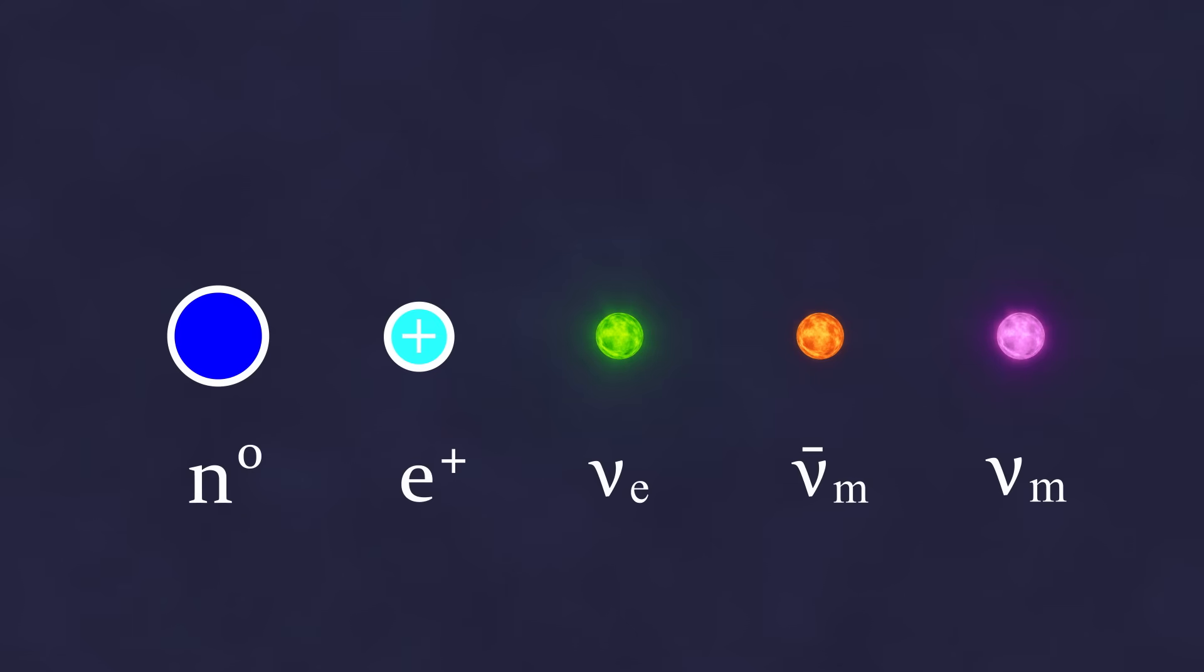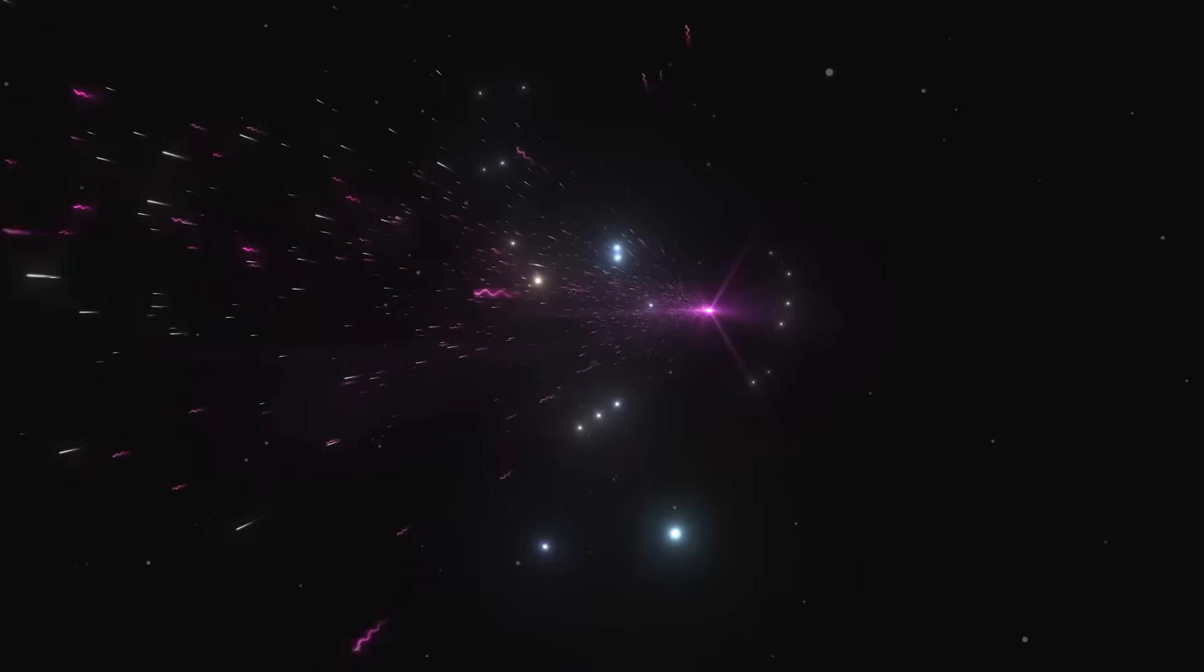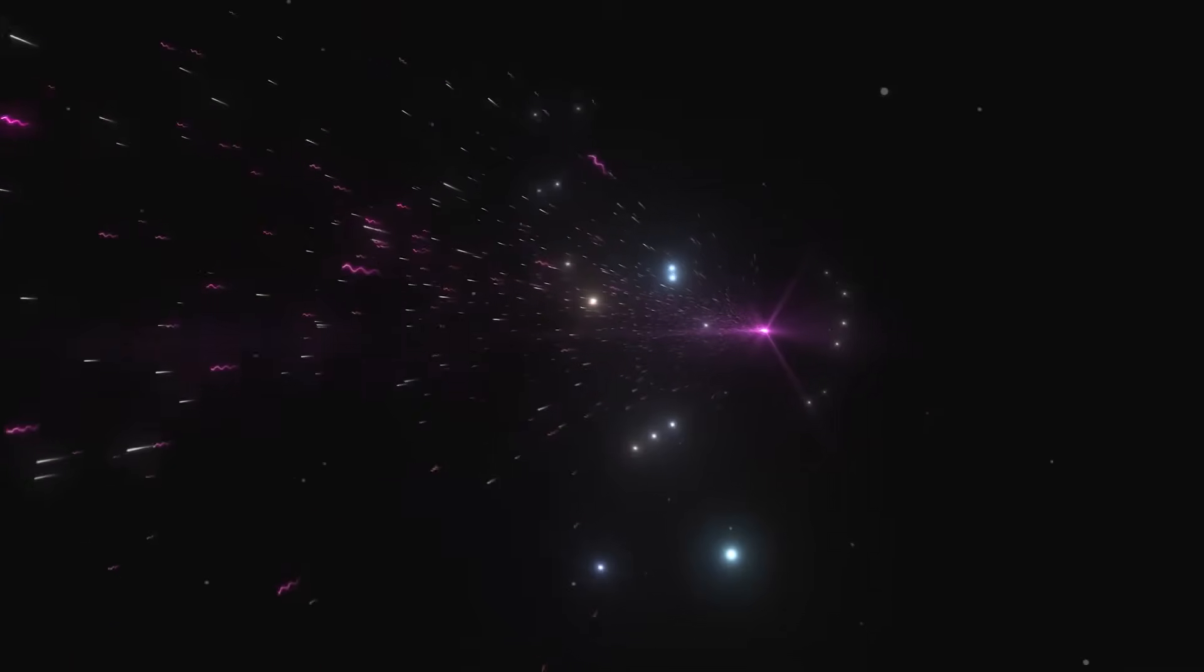These neutrinos, produced by protons moving at relativistic speeds, can reach energies around 10 to the power of 13 electron volts, and in some cases, up to fractions or even whole units of peta-electron volts, that is, 10 to the power of 15 electron volts. Of course, for us to detect such neutrinos, the jet that produced them must be at least roughly directed toward Earth.